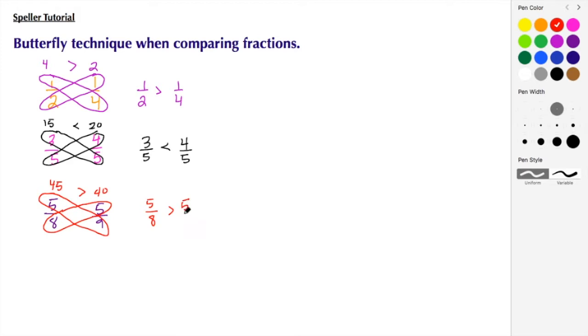And here we see that 45 is greater than 40, so we say that 5 eighths is greater than 5 ninths.